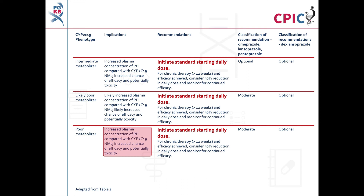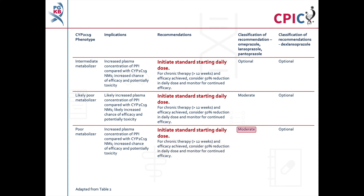Patients with a CYP2C19 poor metabolizer phenotype will have increased PPI concentrations. This increases PPI efficacy and potentially increases the risk of toxicity. These patients can be given the standard starting dose. A dose reduction of 50% can be considered for patients on chronic therapy and where efficacy has been achieved. This is a moderate recommendation for lansoprazole, omeprazole, and pantoprazole, and an optional recommendation for dexlansoprazole.